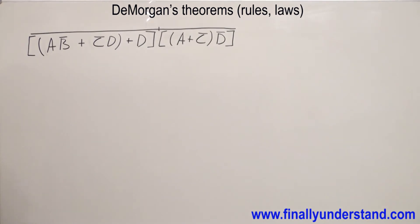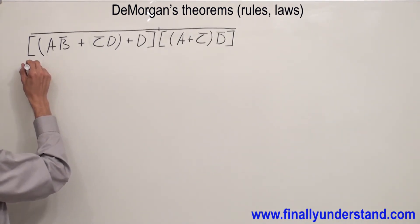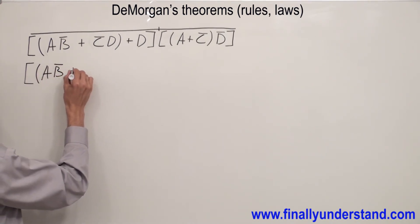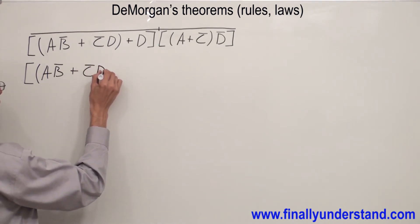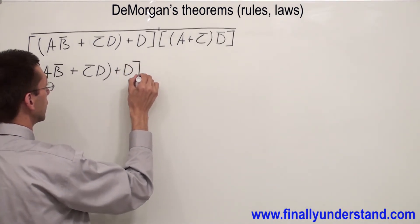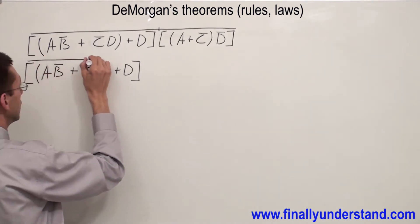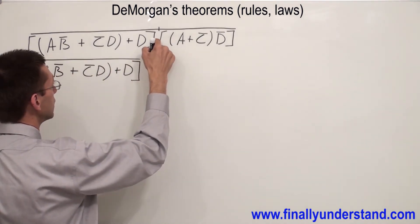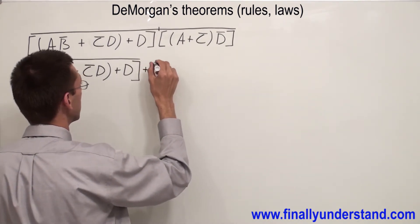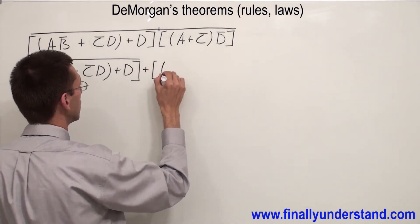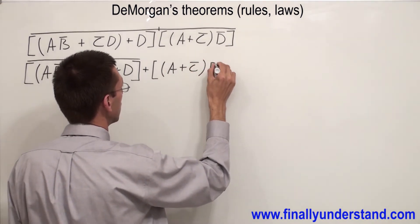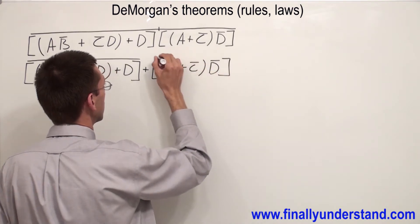That's why I'm going to break my bar at this point — this is the very first step. Let me rewrite. I'm going to have A, B̄ OR C̄D OR D. This is my first term. This AND has to be changed to OR. And I have (A OR C̄D̄) with the bar.